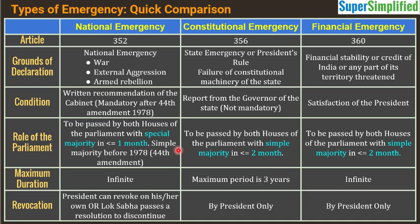Now let's come to the types of emergency. To simplify things and make it easier to understand, compare, retain, and revise, this information has been given in a tabular format. Article 352 deals with national emergency, Article 356 deals with constitutional emergency or President's Rule, and Article 360 deals with financial emergency. You can remember: 352 plus 4 is 356, and 356 plus 4 is 360.